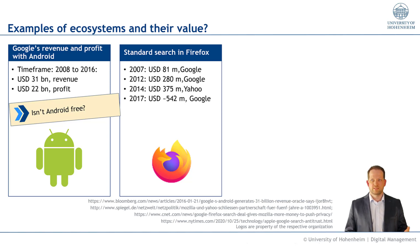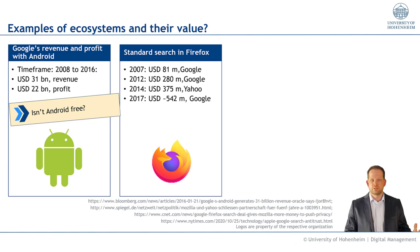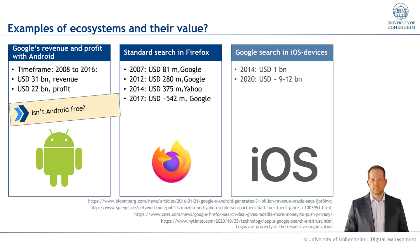In 2007, Google paid for being that default search and they paid 81 million US dollars. In 2012, it was again Google who paid for it — by then 280 million US dollars. In 2014, it was Yahoo. In 2017, Google again, and the payments go up and up, which Firefox earns by setting the standard search engine.